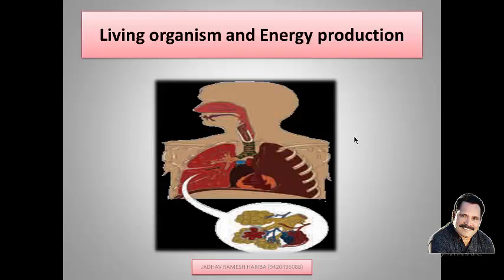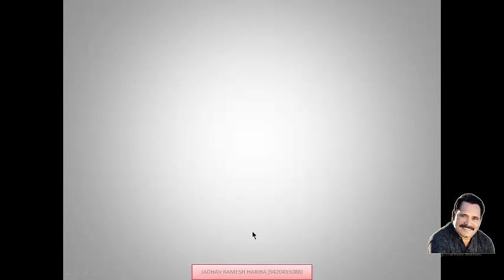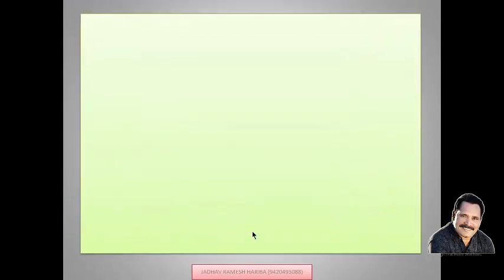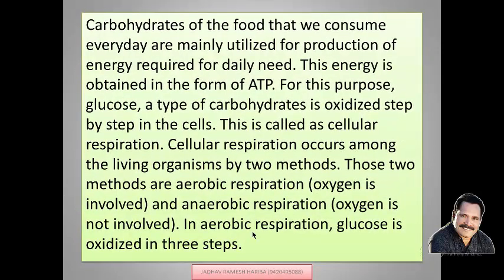Various organs take part in the respiratory system through which we obtain energy. Carbohydrates — the food we consume every day — are mainly utilized for the production of energy, which is essential for daily work and daily needs. The energy is obtained in the form of ATP, that is adenosine triphosphate molecules, which we call the energy currency molecules or energy molecules.